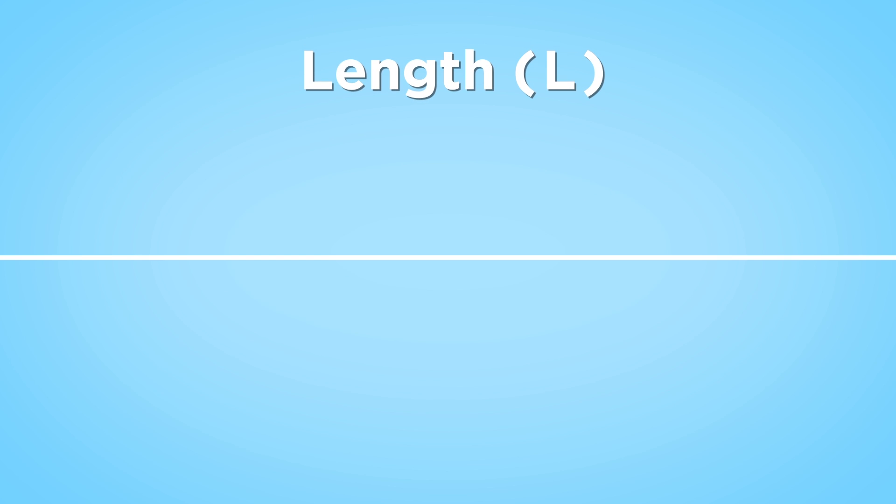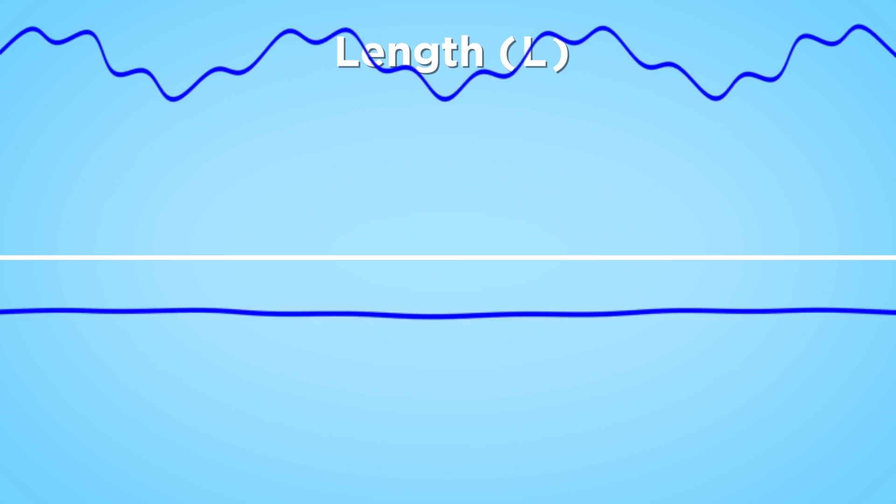If we start with a string of length L and you pluck it, what happens? Well, the string makes a wavy shape and a sound comes out. Maybe the wave moves like this or this. But those are complicated. To understand them, we need to begin with the most basic kind of wave, a sine wave.